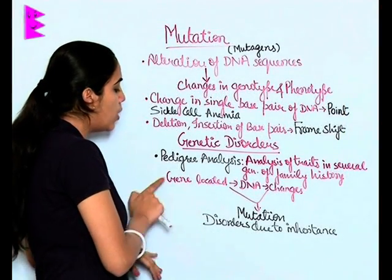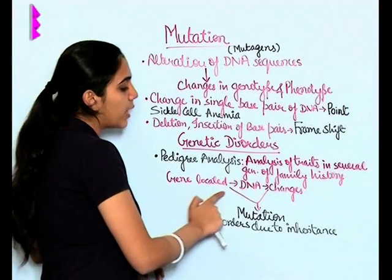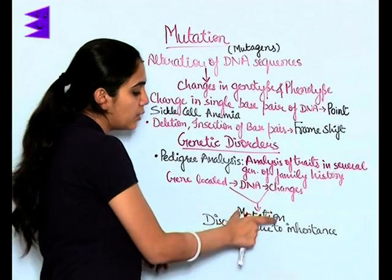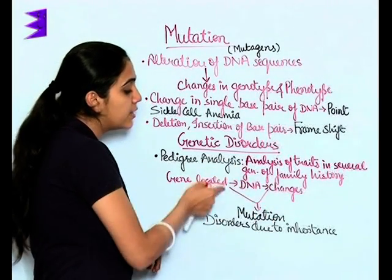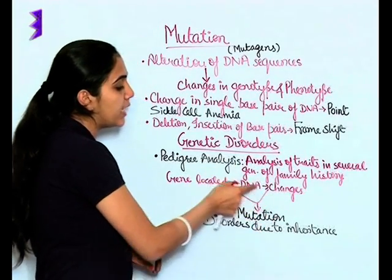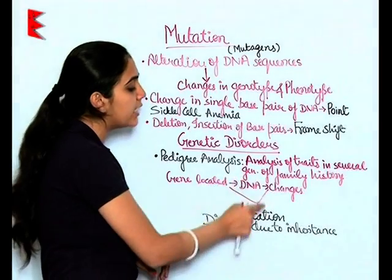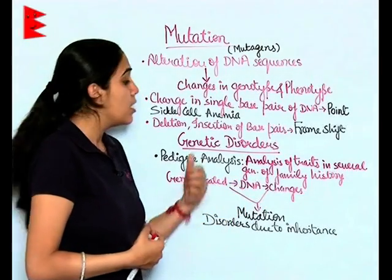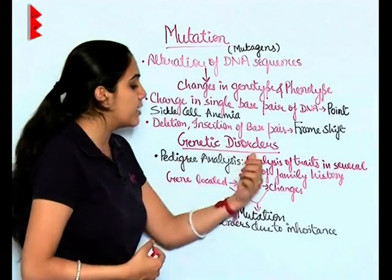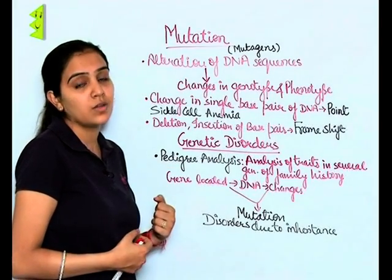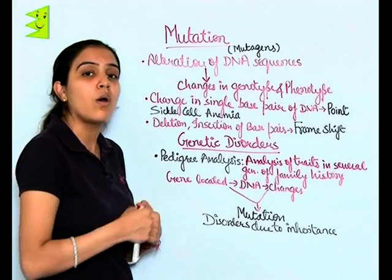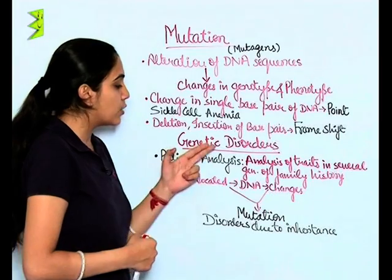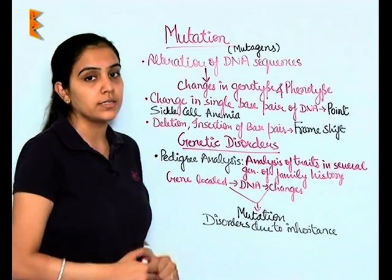As we know, genes are located on DNA. If DNA changes, mutation occurs, and these mutated genes or mutated genetic material lead to disorders. Genetic disorders are already inherited in human beings, which is why understanding them through pedigree analysis is important.